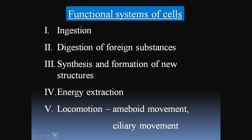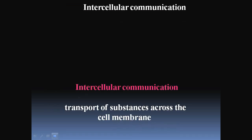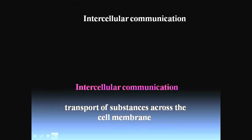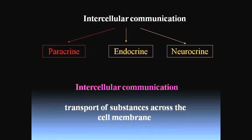The overall functional systems of the cell are: ingestion and digestion of foreign substances, synthesis and formation of new structures, energy extraction, and locomotion. Toward the end of cell physiology, we see intercellular communications, which may occur via three different routes: paracrine, endocrine, and neurocrine — that means the transport of substances across the cell membrane.